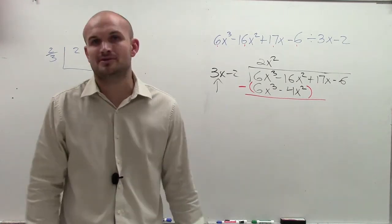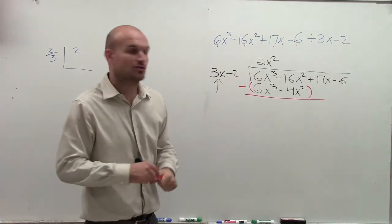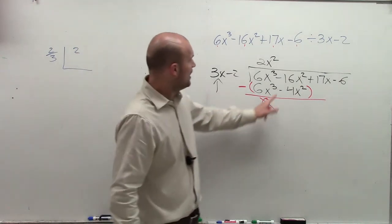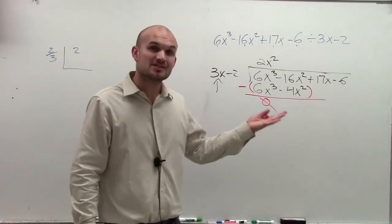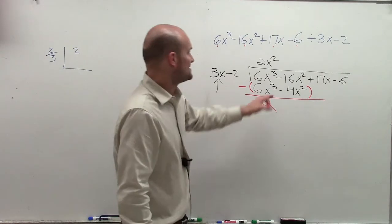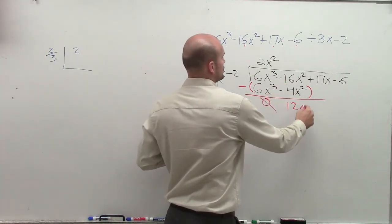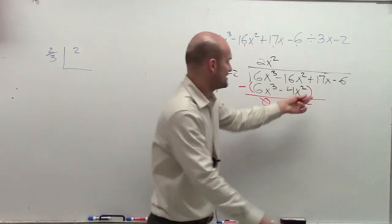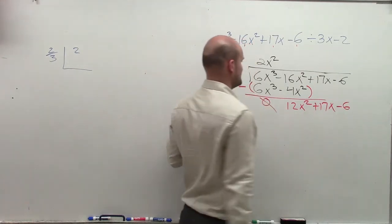6x cubed minus 6x cubed is 0x cubed, which is 0. Negative 16x squared minus a negative 4x squared, which now is a plus 4x squared, is now going to give you a negative 12x squared. And then 17x minus 0x is just going to give you a plus 17x. Negative 6 minus 0 is going to still give you negative 6.